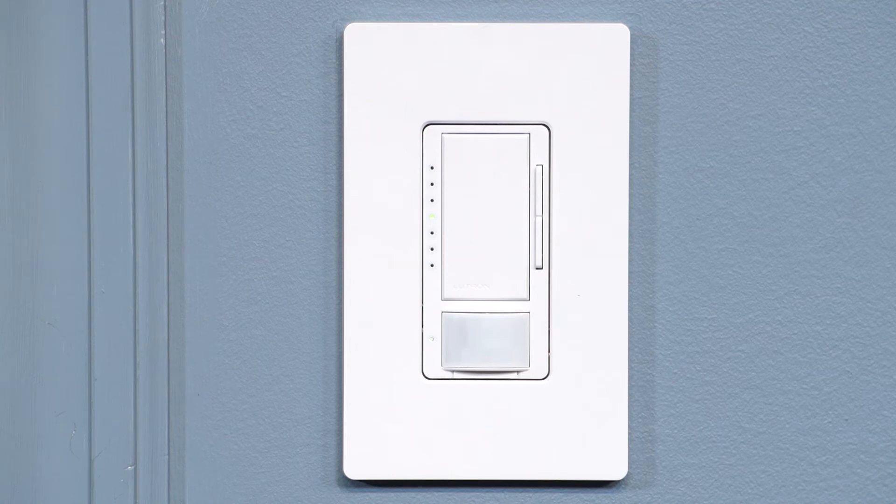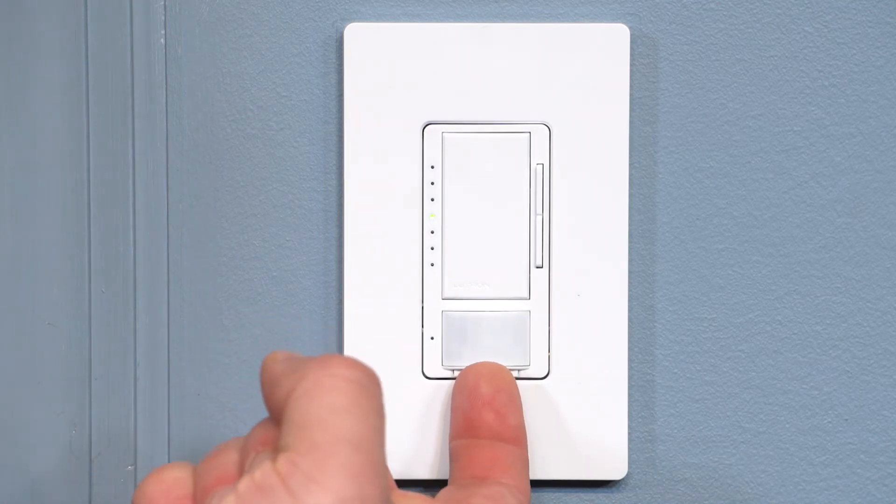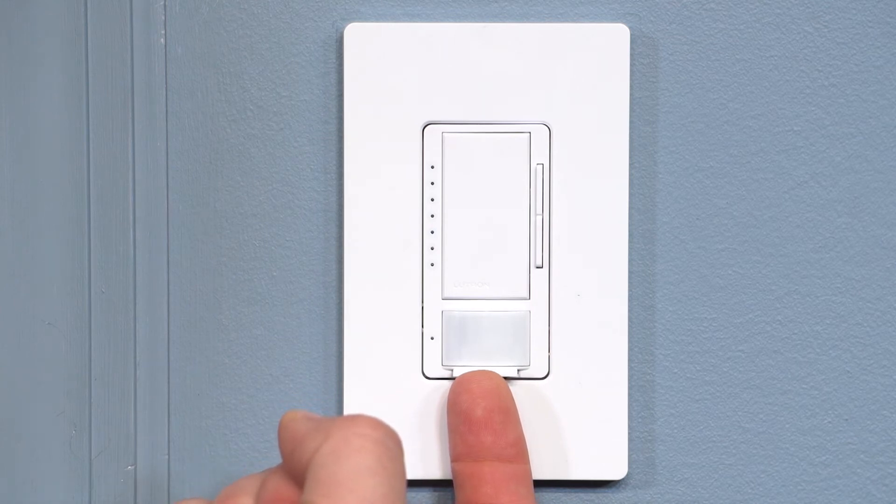To adjust the sensor sensitivity, first enter Advanced Feature Mode by pulling out the front accessible service switch. This will turn off your lights.